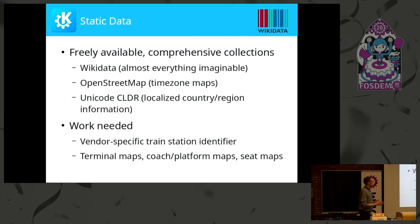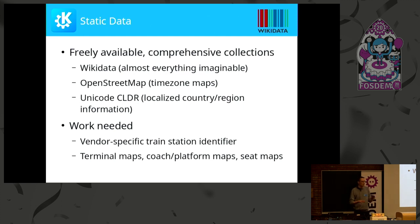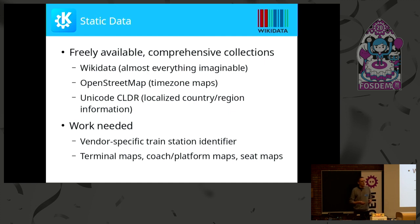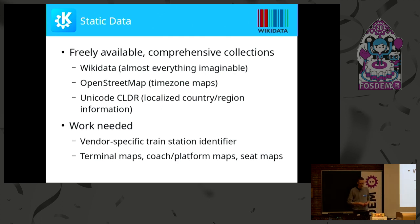For static data, we also have quite some stuff to work with. Most prominently Wikidata — structured data on pretty much everything imaginable — and OpenStreetMap covering location-specific parts, and also time zone maps, which are really important for this use case. Areas where we still have some gaps include adding vendor-specific station identifiers to Wikidata, which is necessary to match barcode content, and the whole problem of indoor navigation and navigation to your specific seat.